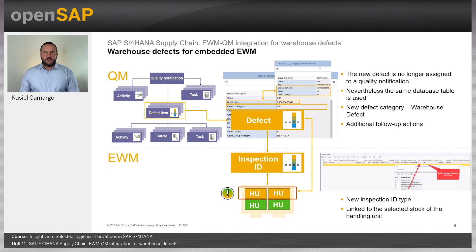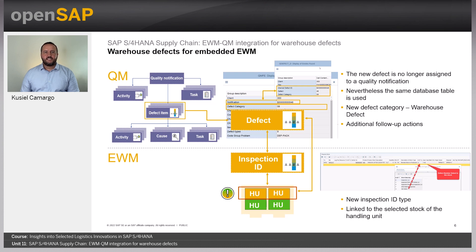It is important to understand some changes in the data relationship of defects and quality notifications that were made to allow users to create generic defects, production defects, and now warehouse defects. From the quality management side, we now have a new defect handling model in SAP S/4HANA, but it is still based on the quality notification data model. This means the new defect is no longer assigned to a quality notification and can be used independently. Nevertheless, this same database table is used. A new defect category was created: number 08, warehouse defect. Also, additional follow-up actions were created.